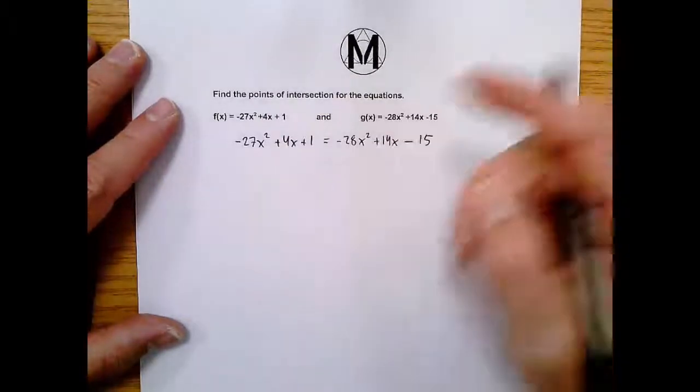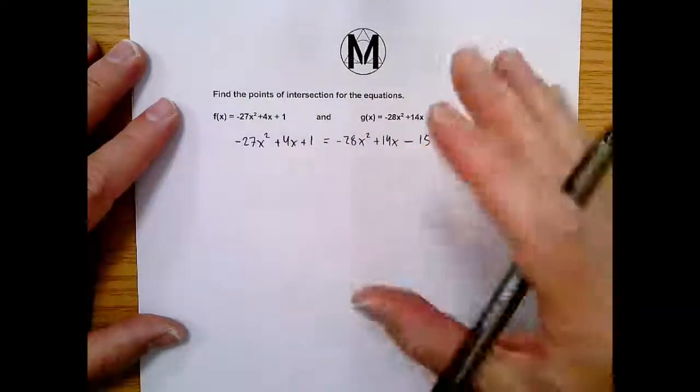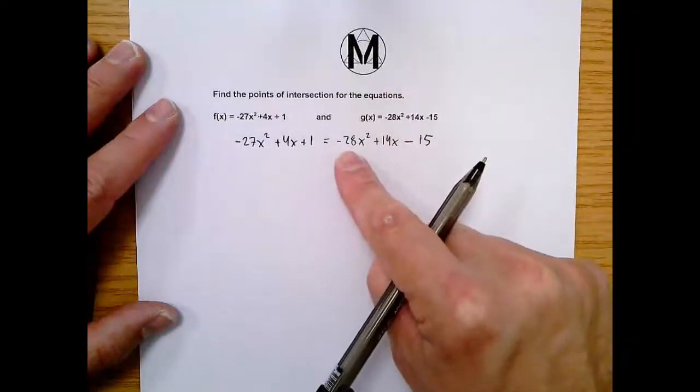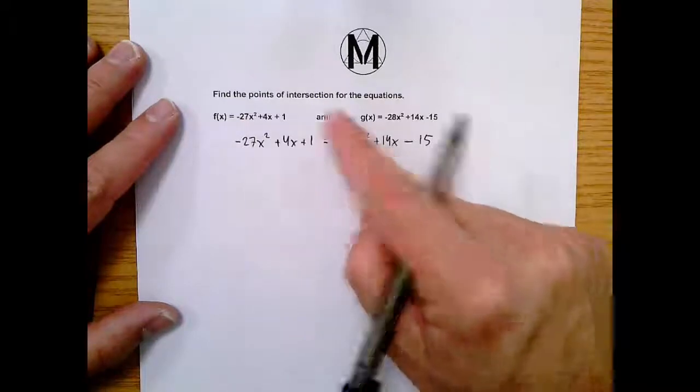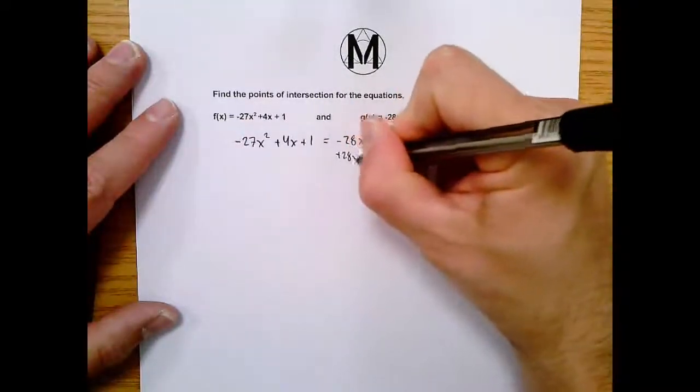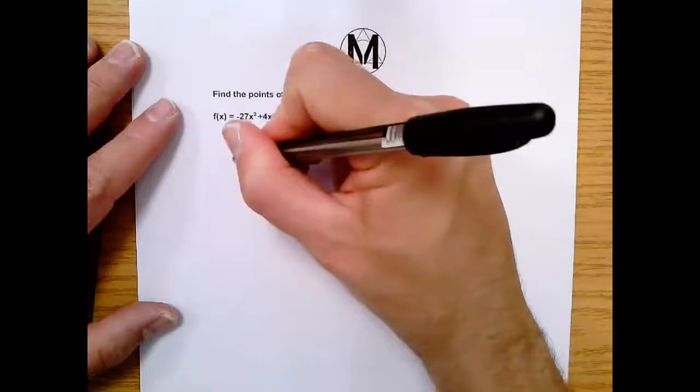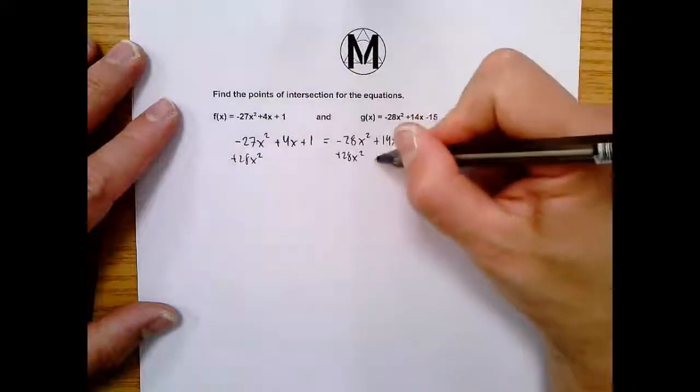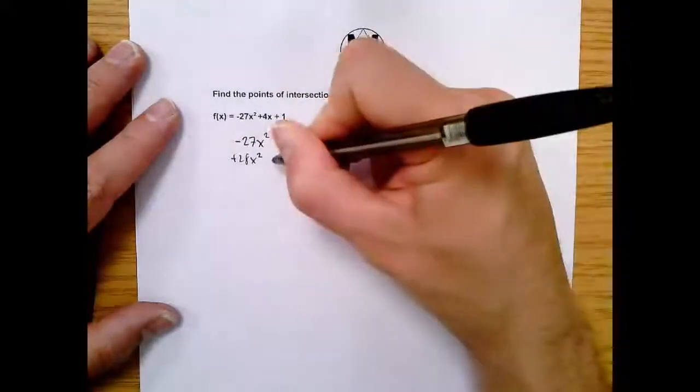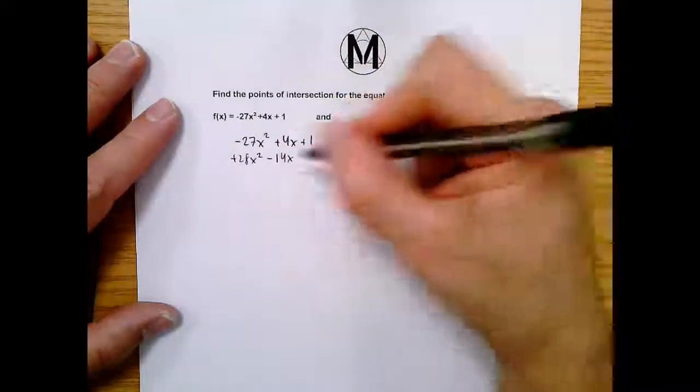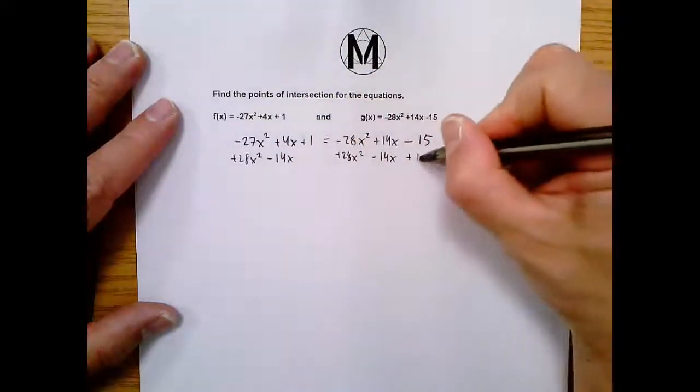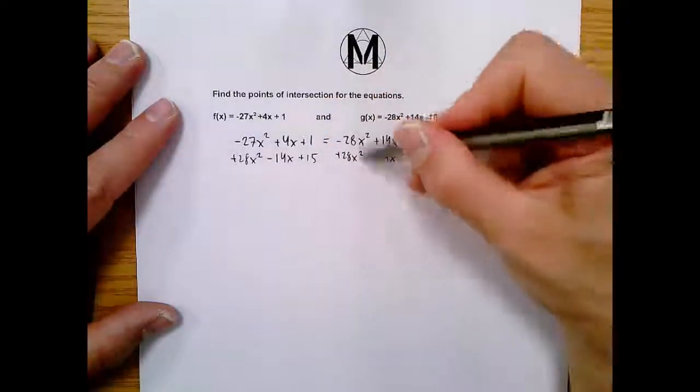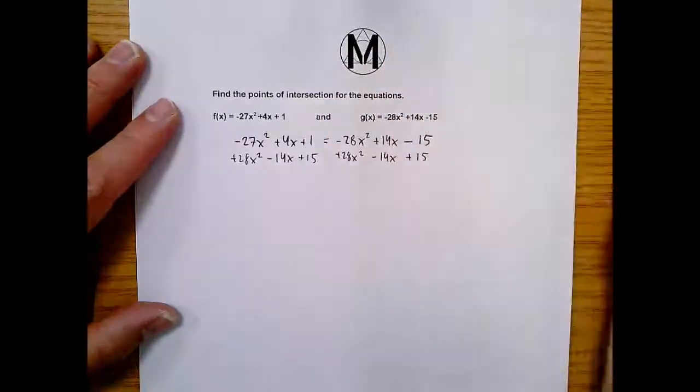Okay, now I'm going to move everything left here, because when we deal with quadratics, we like to be in standard form. So moving left here, the first move is I add 28x² to both sides. And that will make that cancel. To get rid of this, I subtract 14x from both sides, and then here I add 15 to both sides. So these would all cancel and leave 0 over here.